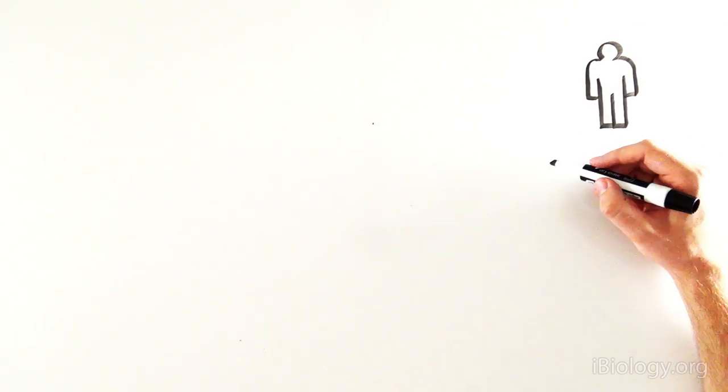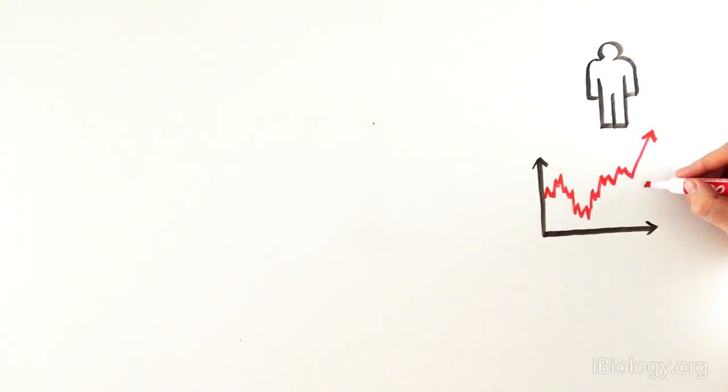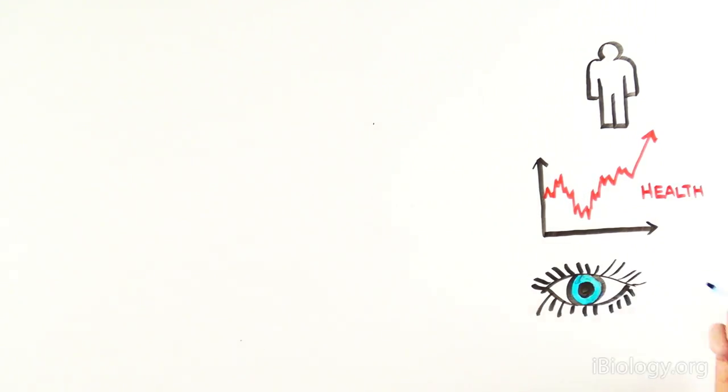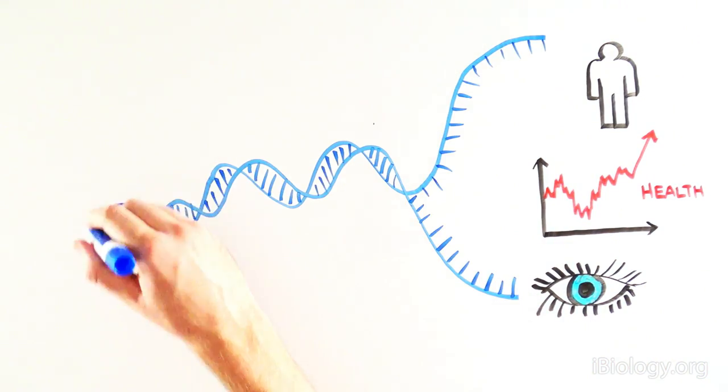All of the information needed to direct our development from single cells, our disease susceptibility, the color of our eyes and our skin is encoded in our DNA.